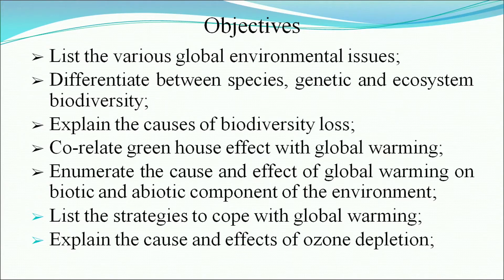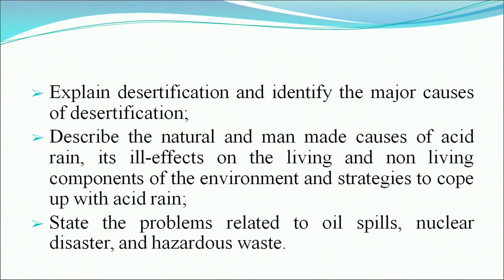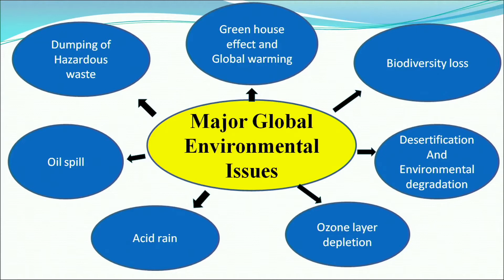Correlate greenhouse effect with global warming and enumerate the causes and effects of global warming on the biotic and abiotic components. List the strategies to cope with global warming, explain the cause and effect of ozone depletion, desertification, and identify the major causes. Describe the natural and man-made causes of acid rain, its ill effects, strategies to prevent, and state the problems related to oil spills, nuclear disaster, and hazardous waste.